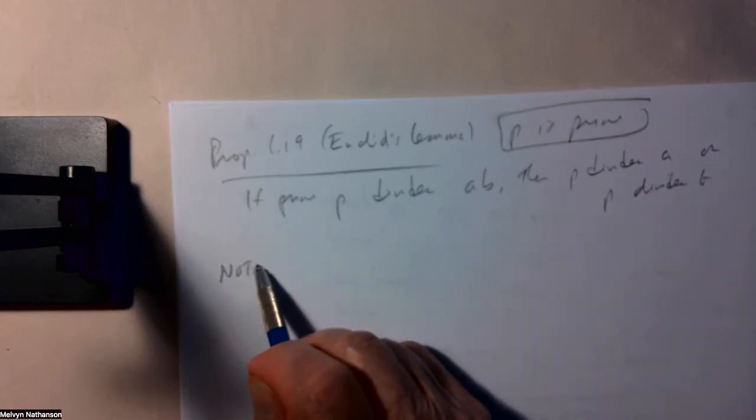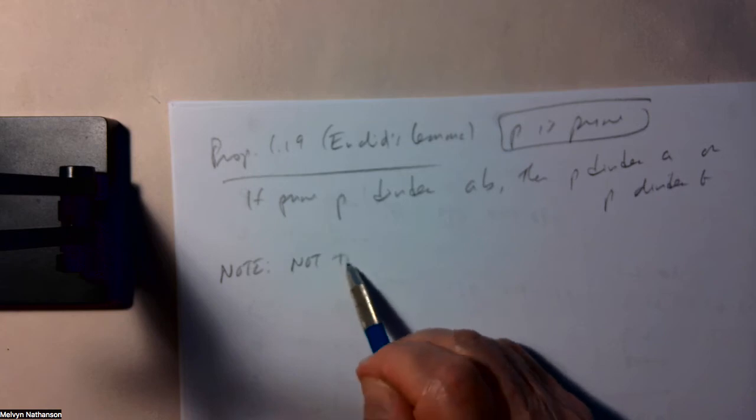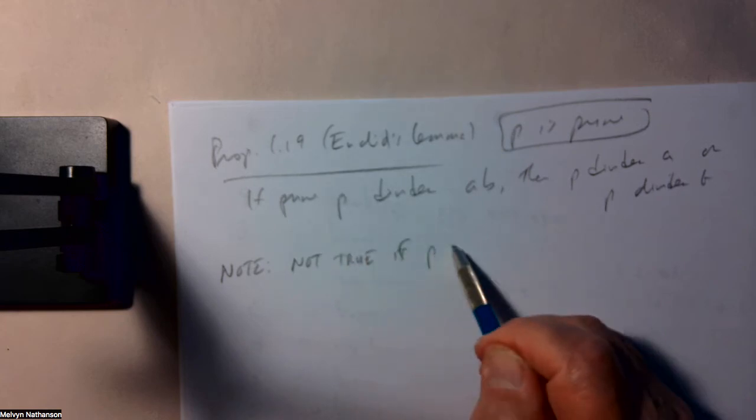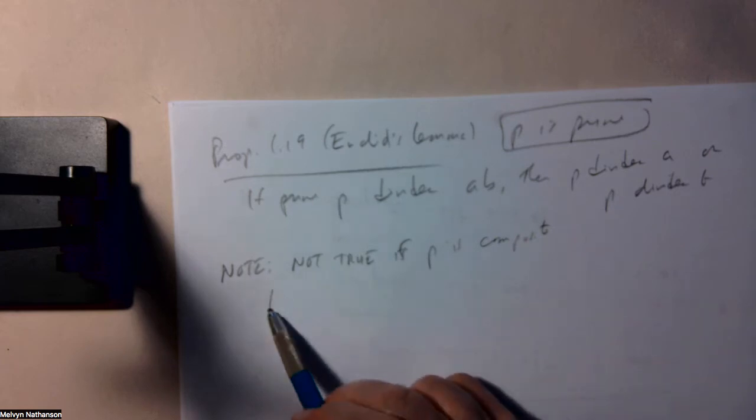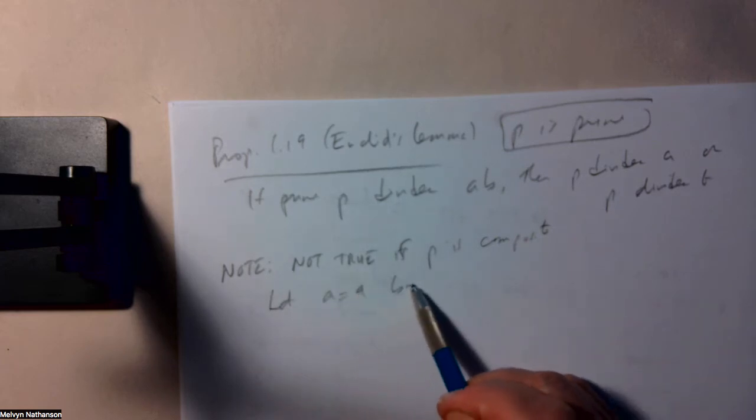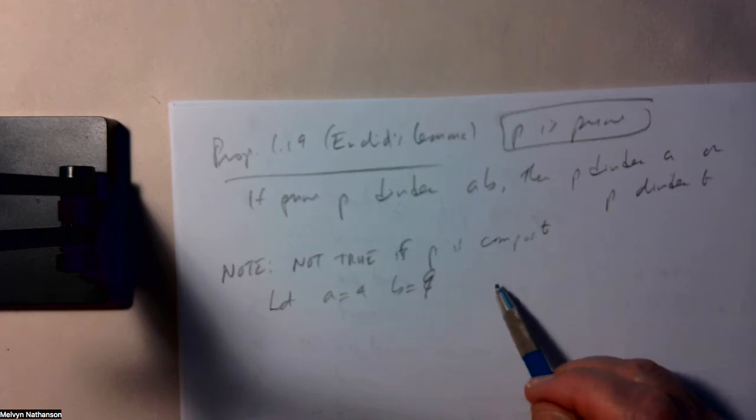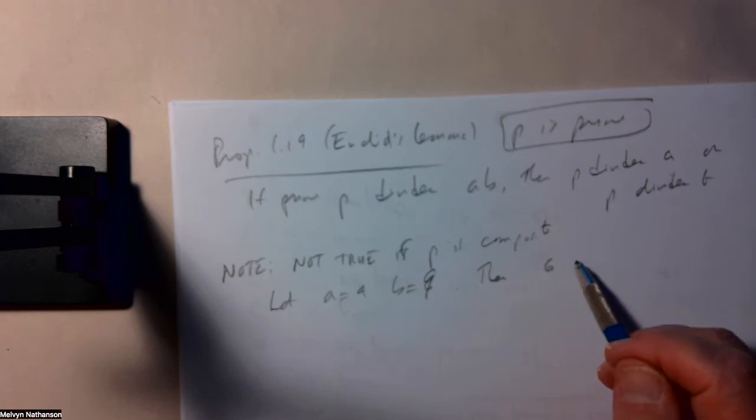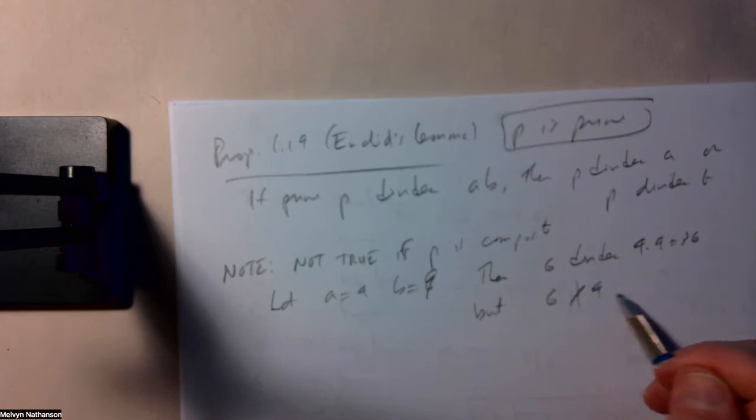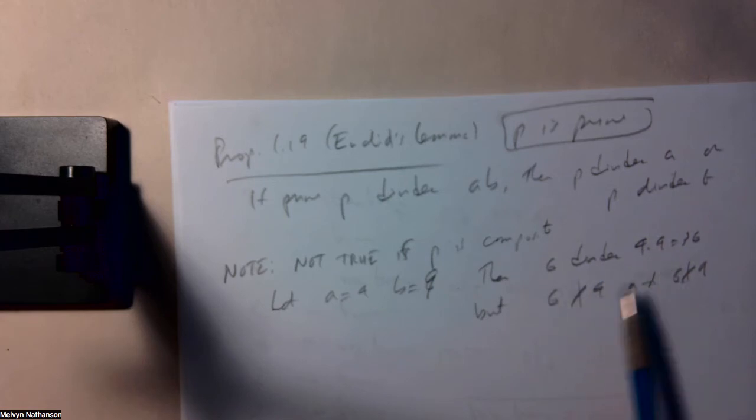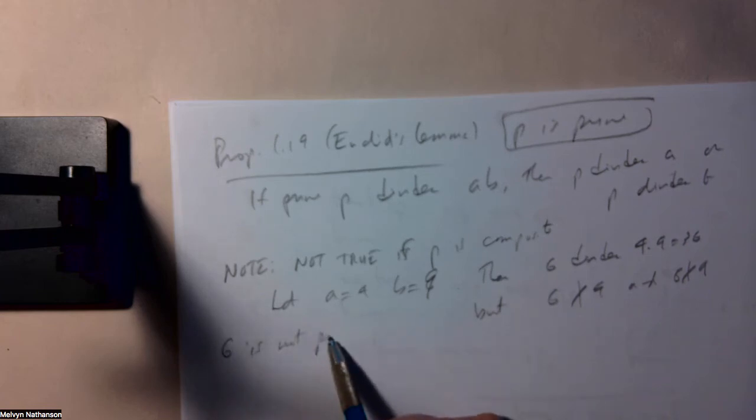Note, this is not true, necessarily, if p is composite. For example, suppose you let a equal 4 and b equal 9. Then 6 divides 4 times 9, which is 36. But 6 does not divide 4, and 6 does not divide 9. So 6 divides this product of two numbers, but it does not divide either factor. And that's because 6 is not prime.